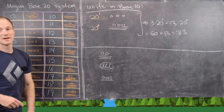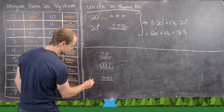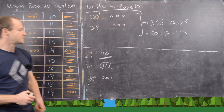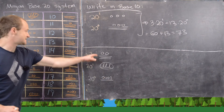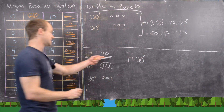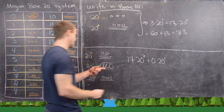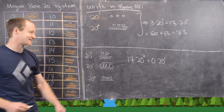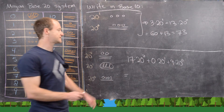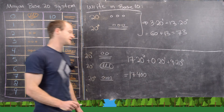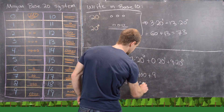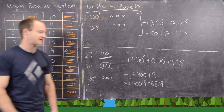For the second example with three rows, working bottom to top: the bottom is the 20 to the 0 space, the middle is the 20 to the 1 space, and the top is the 20 to the 2 space. The top symbol has three lines and two dots, representing 17 in the 20-squared space. The middle digit is 0 in the 20 to the 1 space, and the bottom is 9 in the 20 to the 0 space. So that's 17 times 400, plus 0, plus 9 — giving us 6,800 plus 9, which is 6,809.